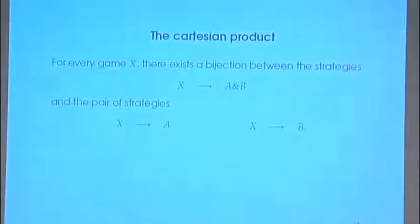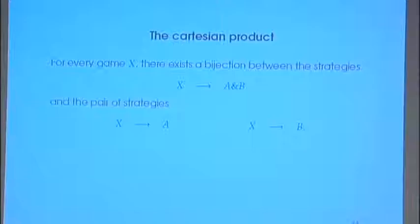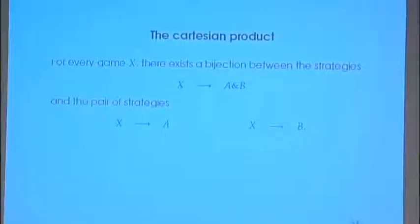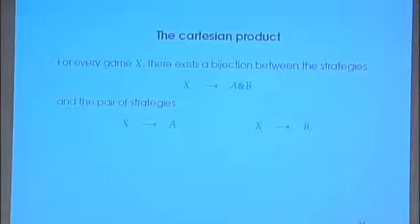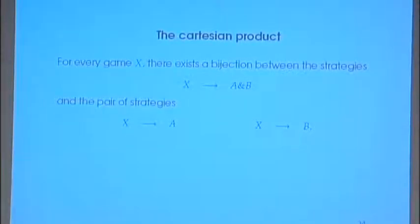A map from X to A with B is the same as the pair of maps. This is reminiscent of — in fact exactly the same kind of structure — that we have in sets and functions.